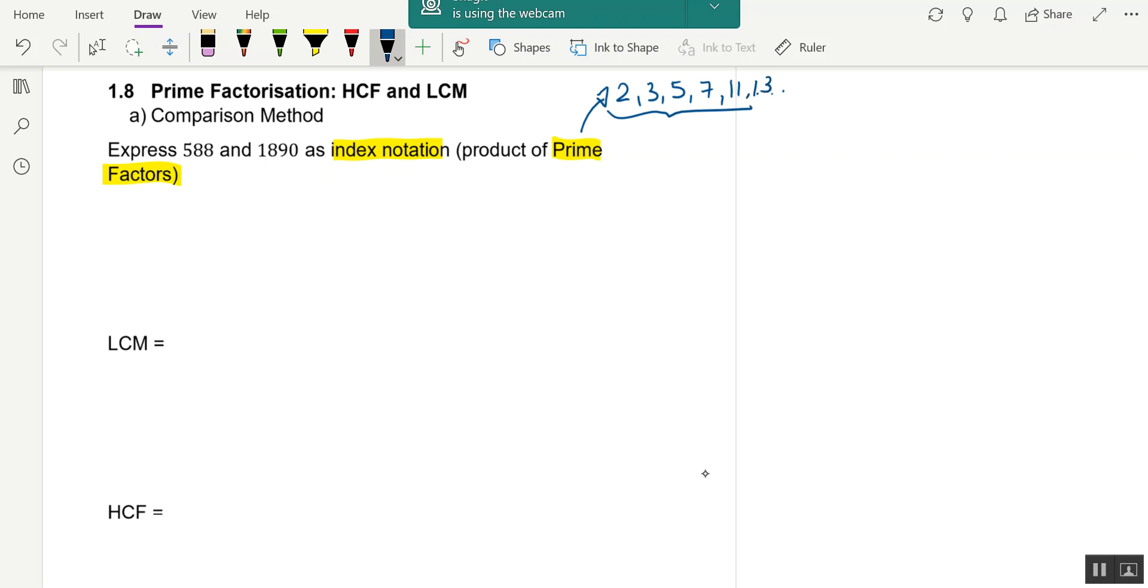For 588, first thing - when you see an even number, divide by two. Use your calculator to keep dividing by two. You'll get 294, divide by two again you get 147. This is quite obvious that it's a multiple of seven, so we divide by seven.